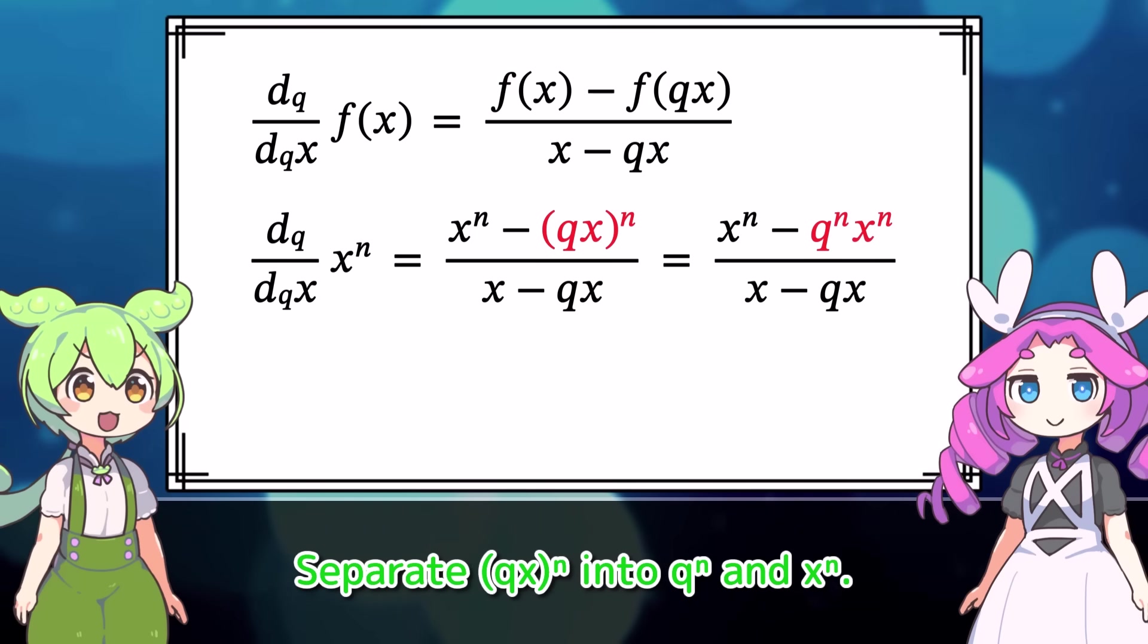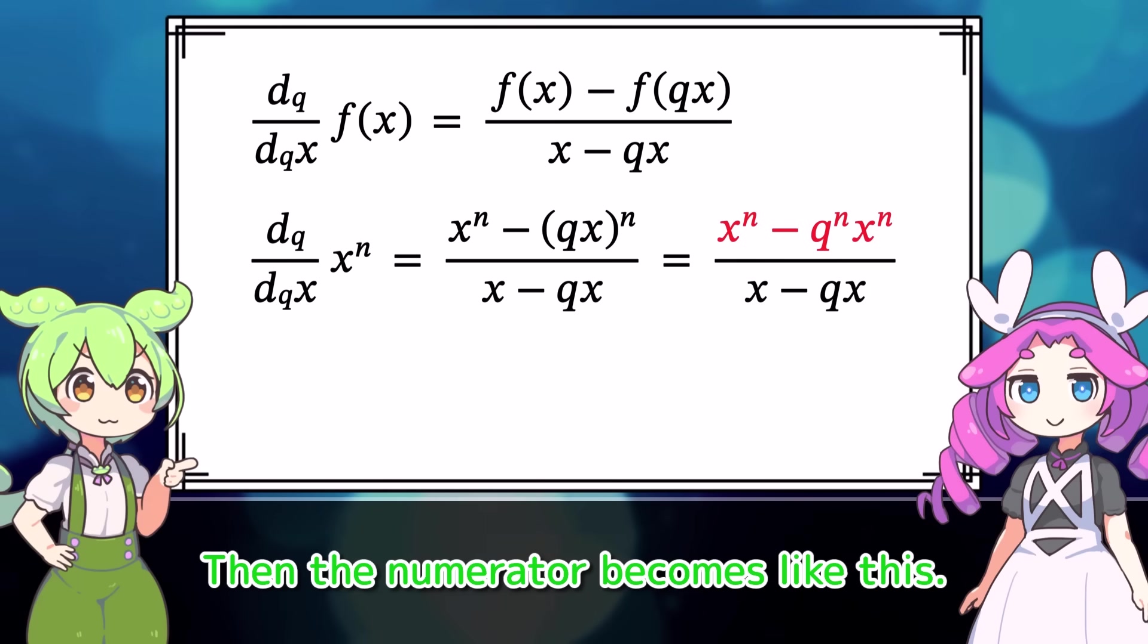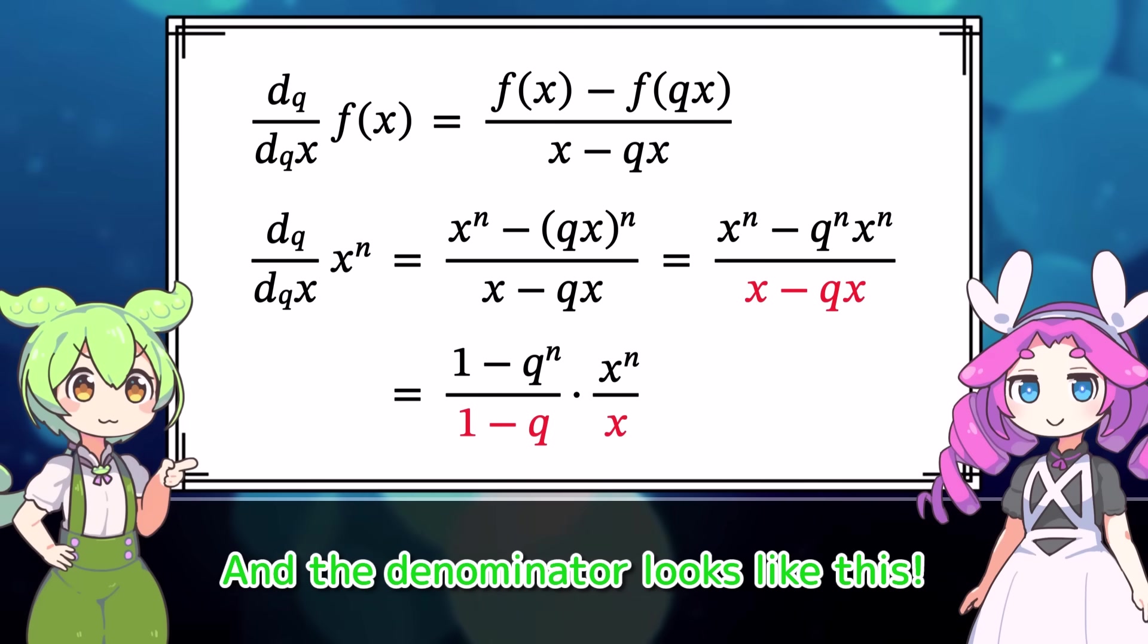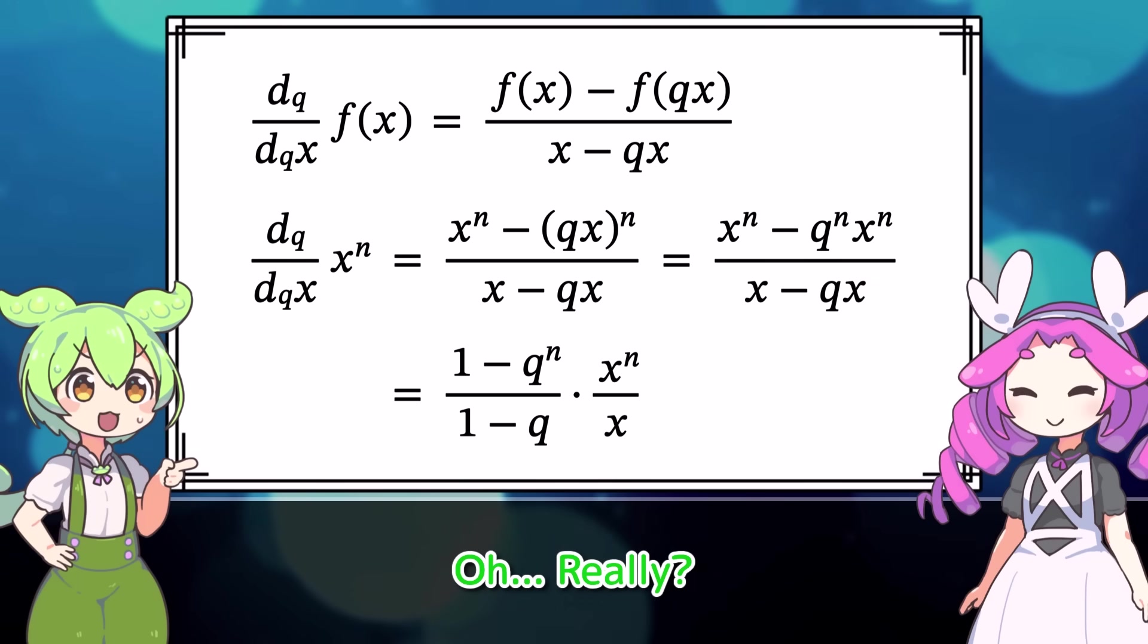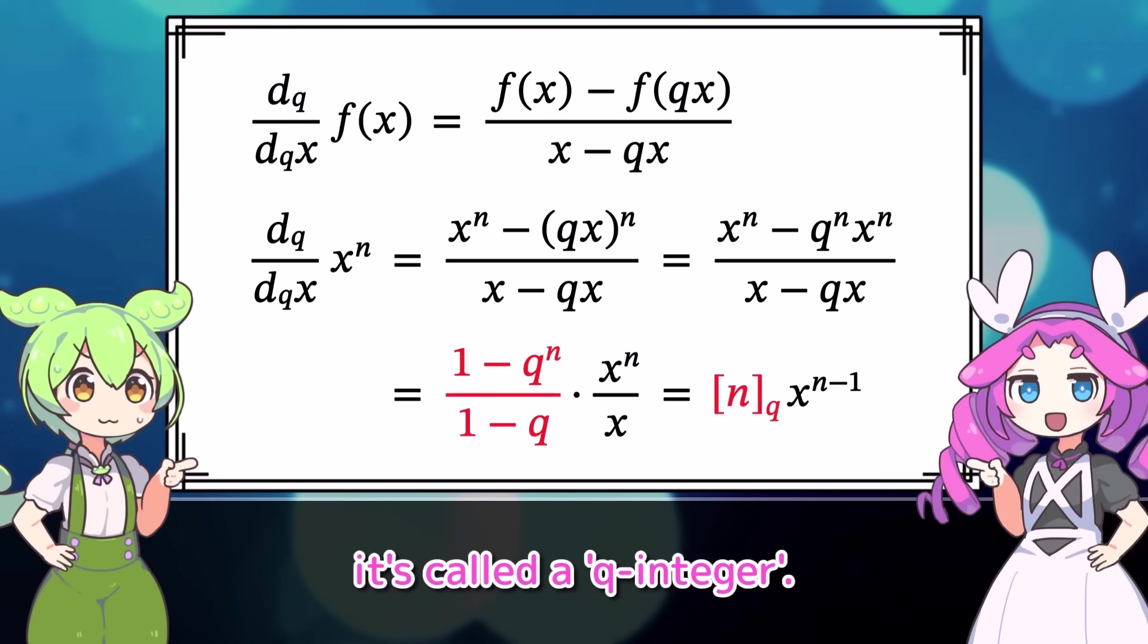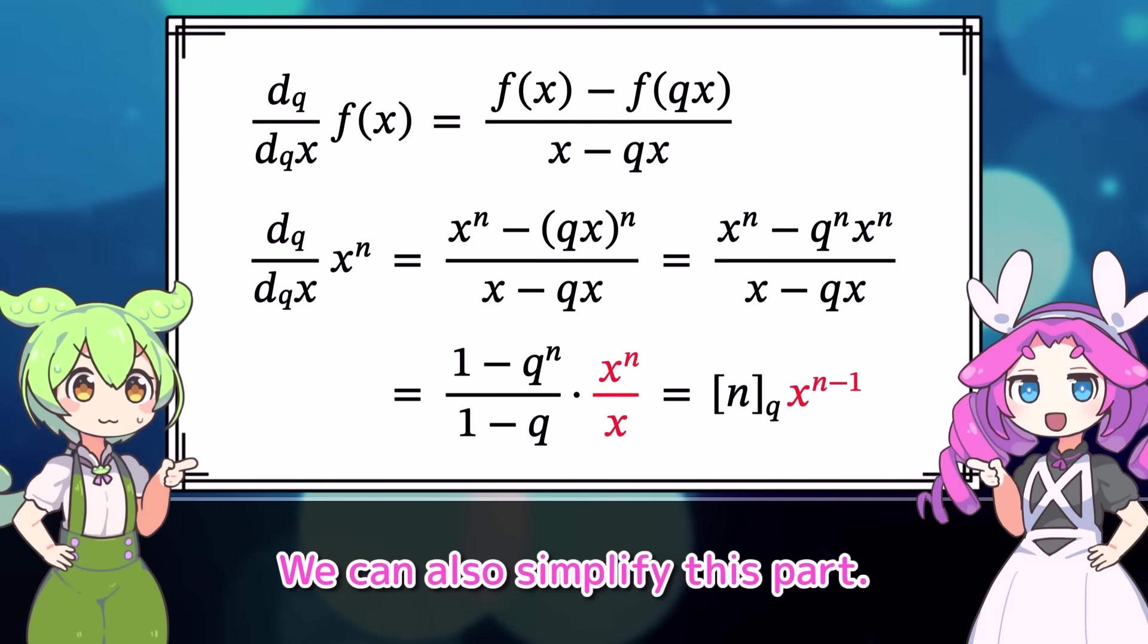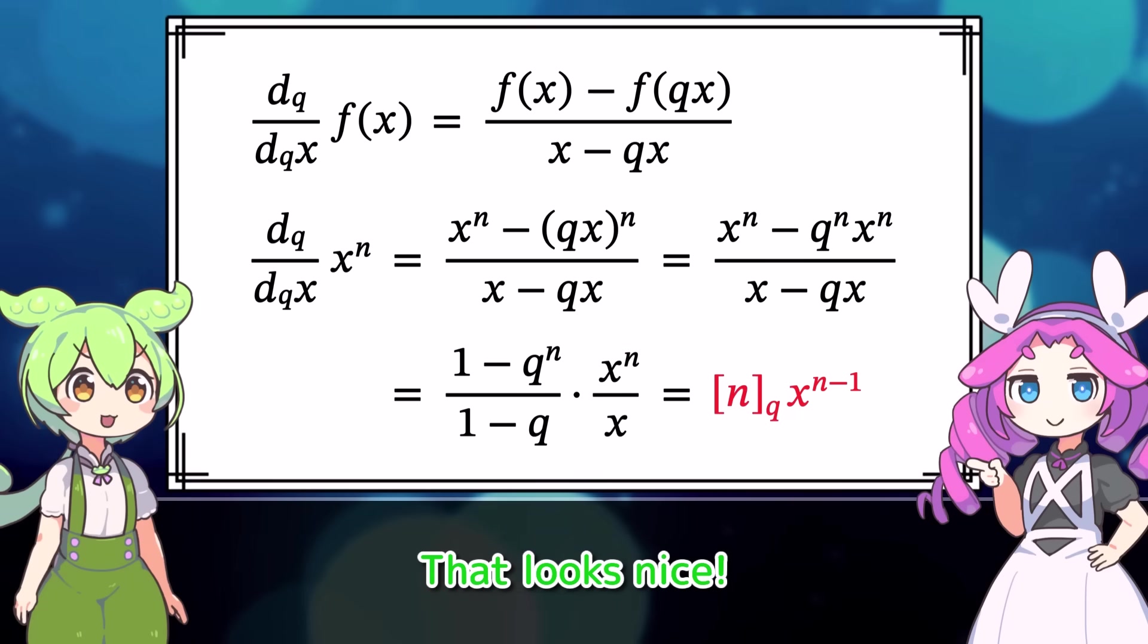Yes! Separate qx to the n into q to the n and x to the n. Now, factor out the powers of x. Then the numerator becomes like this. And the denominator looks like this. This gives us an interesting result. Oh, really? This part is the q-analog of an integer. It's called a q-integer. We can also simplify this part. Then we can write the result like this. That looks nice!